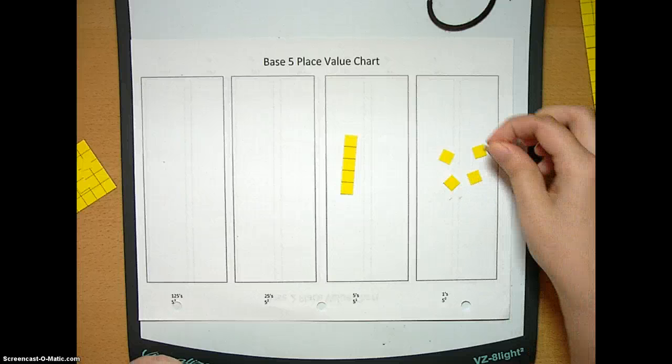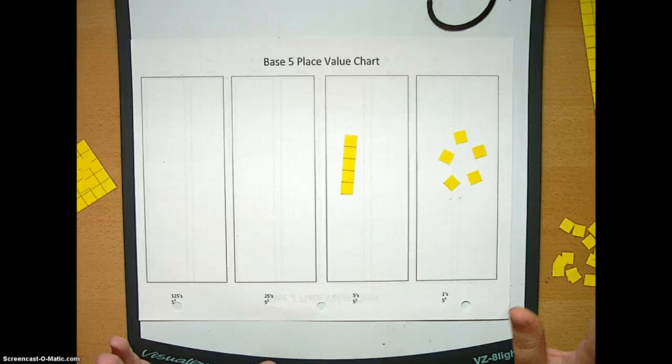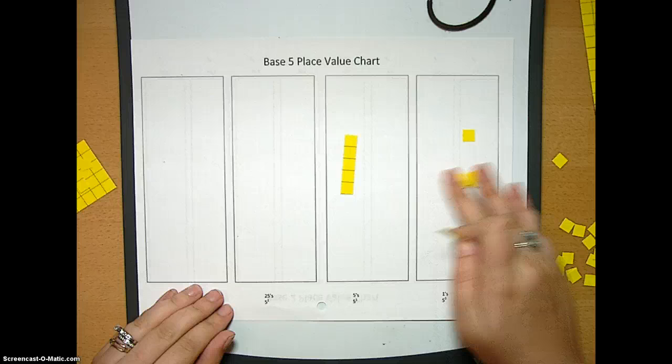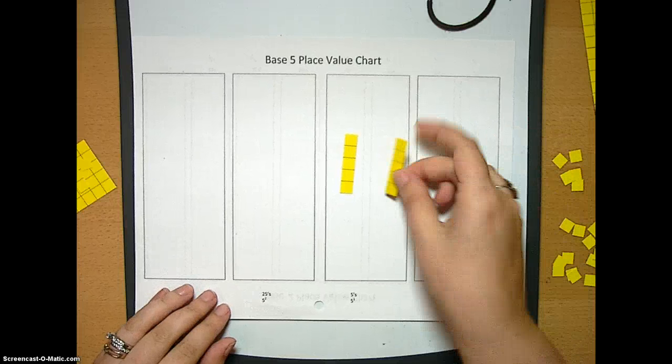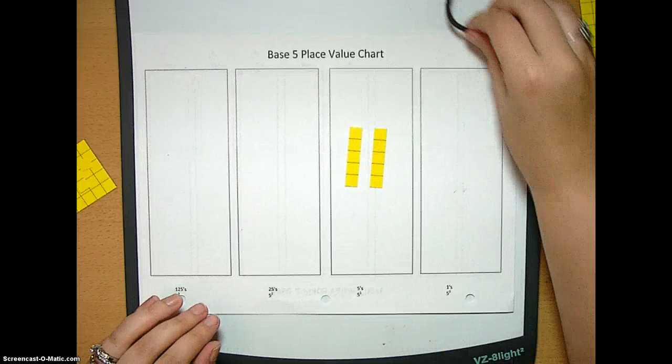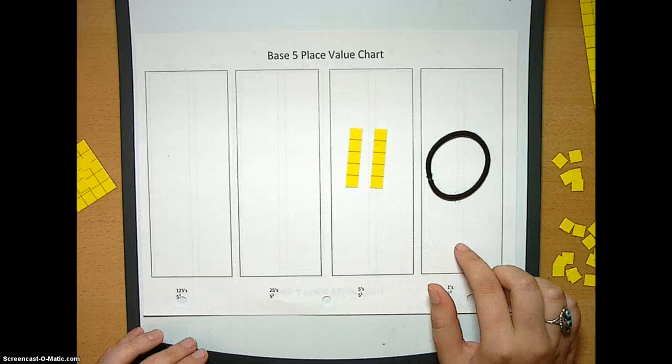And when we add our fifth one, oh my God, impossible. We just can't do that. So we take those away and exchange it for a five. So now we have two, zero, base five.